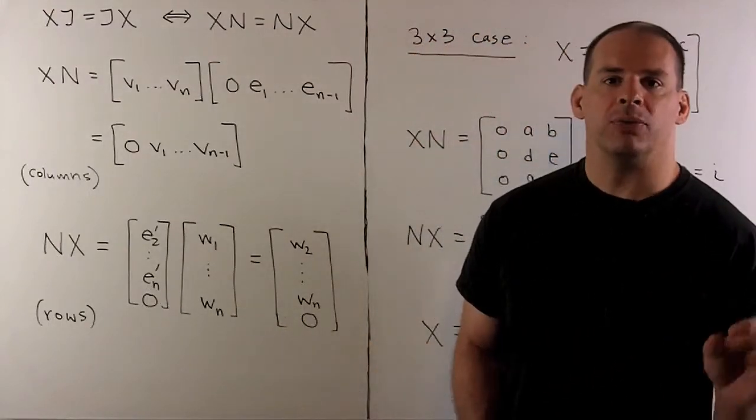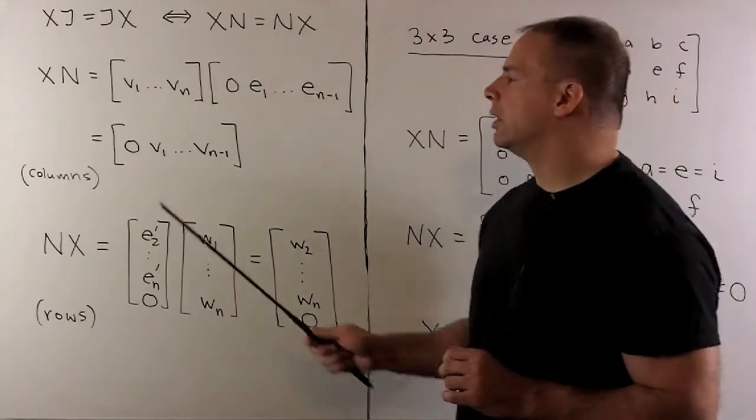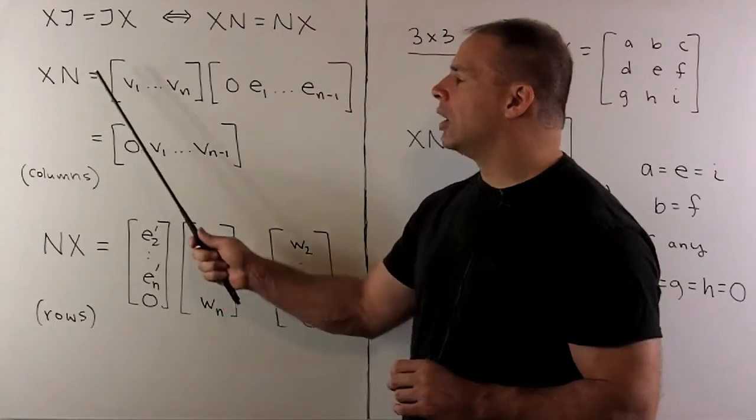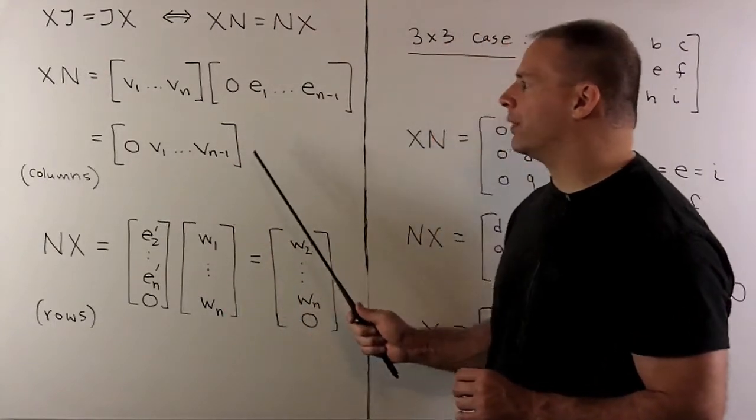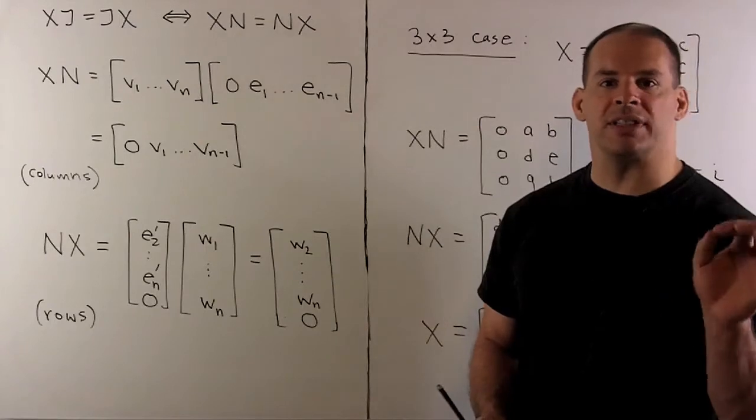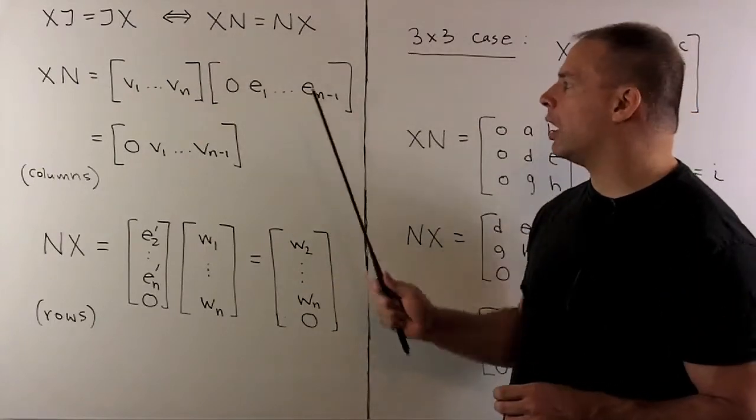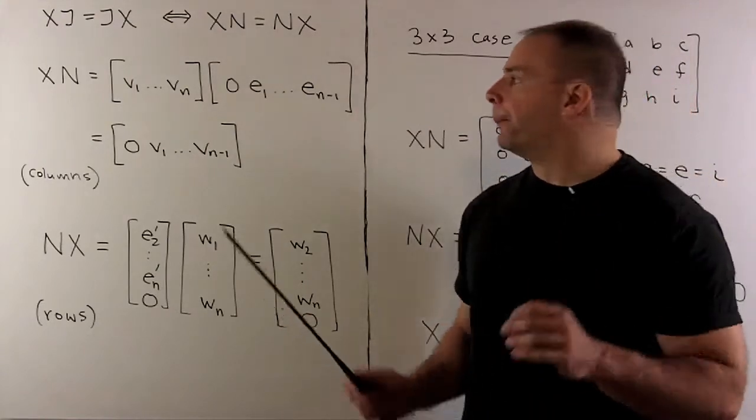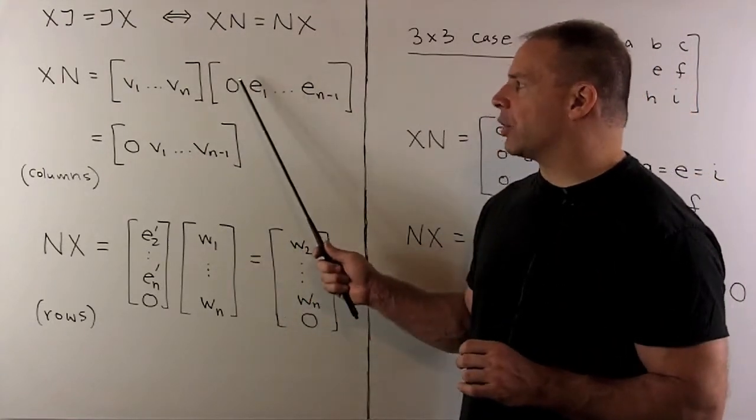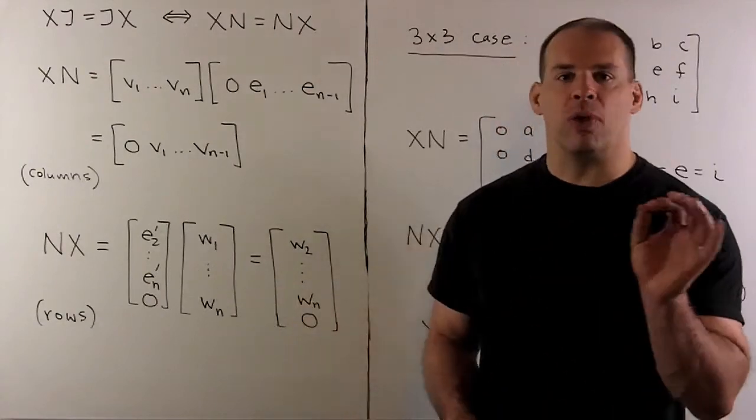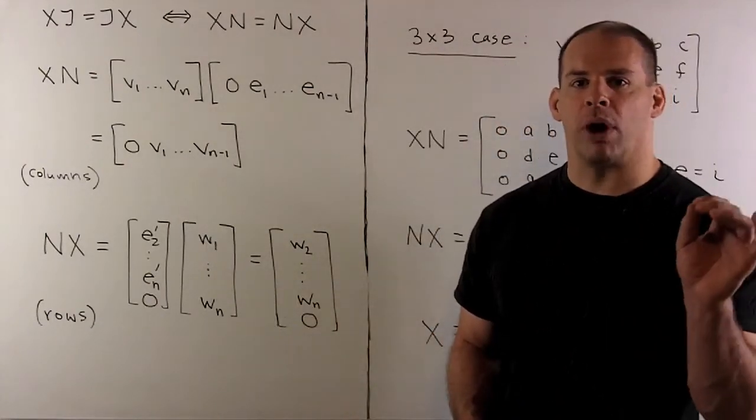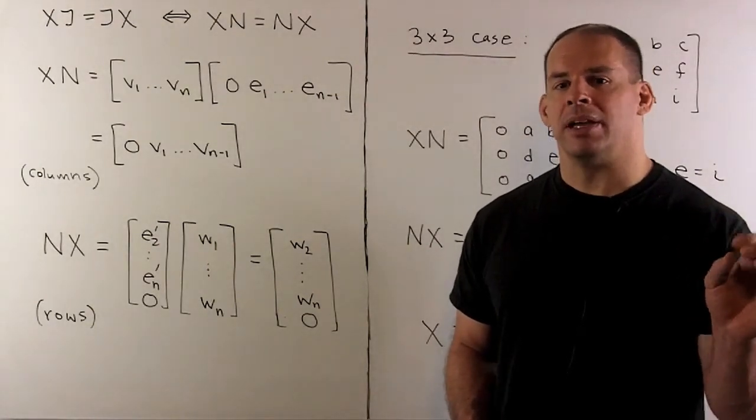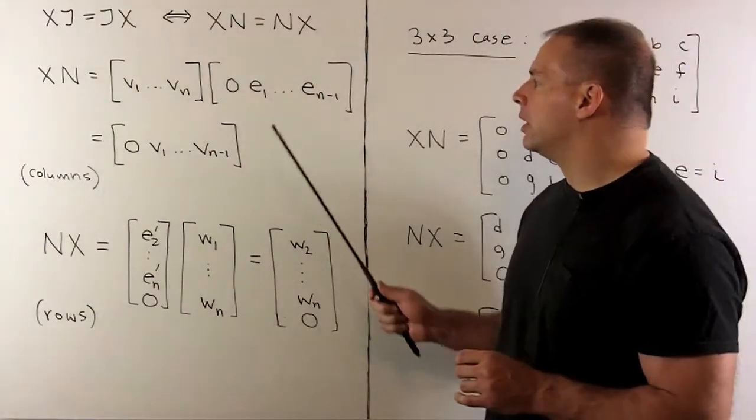Now, we represent our matrices as column vectors. So I'll suppose we can write X as the columns V1 through VN. Our matrix N is going to start with the column of zero vectors, and then we follow it with the standard basis vectors. So we have E1 through E to the N minus 1. So take our matrix times the zero column, we get a zero out. And then the recipe for multiplying a matrix represented as column vectors times the I-th standard basis vector is to pick off the I-th column.